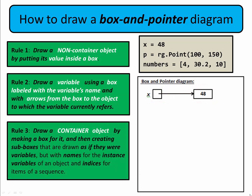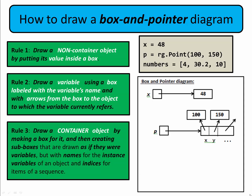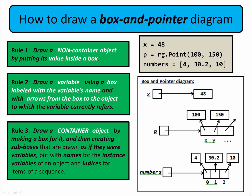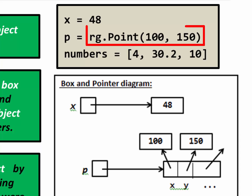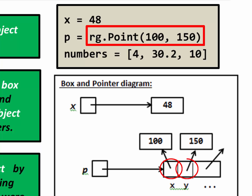The third rule is how to draw a container object. You do so by making a box for it and then creating sub-boxes that are drawn as if they were variables, with names for the instance variables of an object and indices for items of a sequence. For example, when a point is constructed, we draw a box for the whole point and then sub-boxes for each of its instance variables.